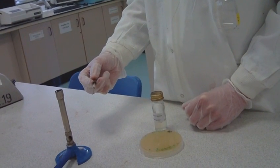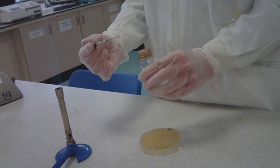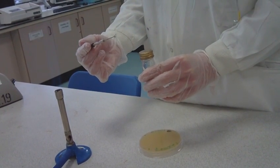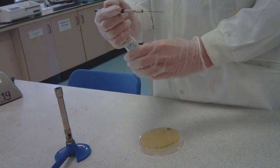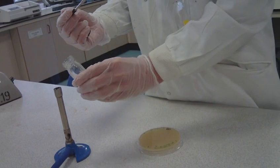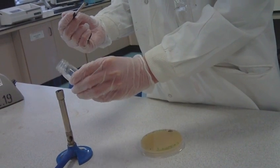Without putting the loop down, lift the test tube containing the inoculum with your left hand. Remove the cap of the bottle with the little finger of your right hand. Pass the neck of the bottle through the flame three or four times so it becomes sterile.